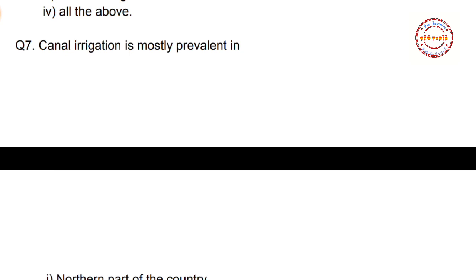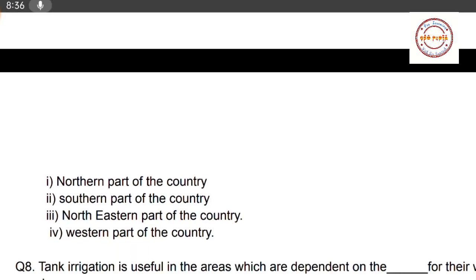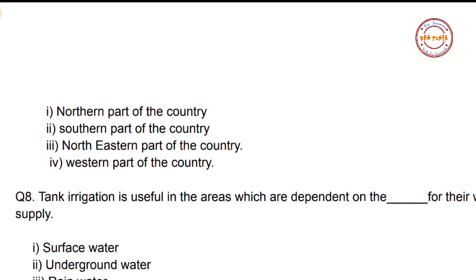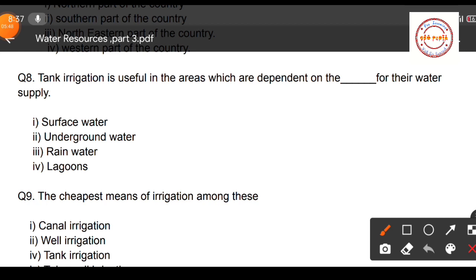Question number seven: Canal irrigation is mostly prevalent in which part of the country? First option: northern part; second option: southern part; third option: north-eastern part; fourth option: western part. The correct answer is option one — canal irrigation is prevalent in the northern part of the country.